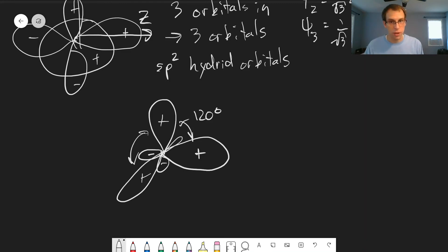And so if we put in three orbitals, these are the three orbitals we get out: psi 1, psi 2, and psi 3. And these are sp2 hybrid orbitals.